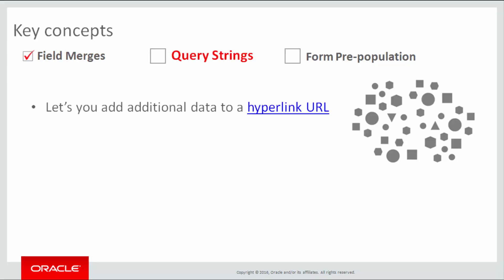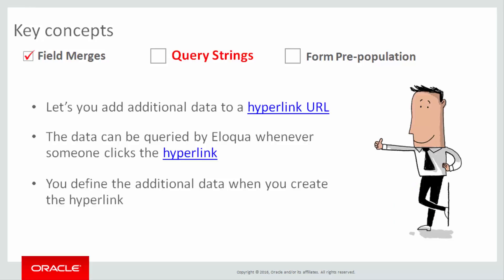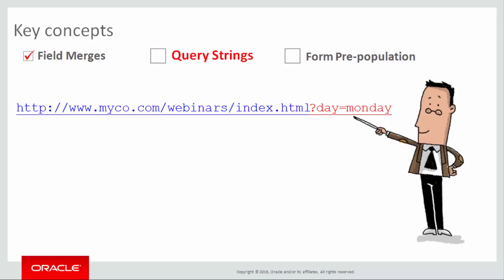A query string is information added to the end of a URL in a hyperlink for the purpose of making additional data available to Eloqua whenever the hyperlink is clicked. The data you make available is up to you. Here's a link and here's the appended query string. It's composed of three parts — it's introduced by a question mark. The first part of the string is called the key; it identifies what is being defined. In this case it's the day of the week. The part after the equals sign is the query value. In this case the day of the week is Monday, so the query string value is Monday.